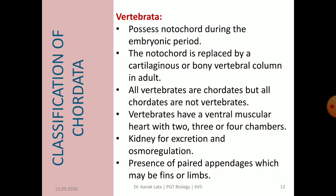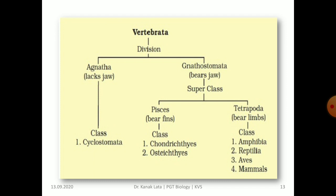Now let us see about Vertebrata. In case of Vertebrata, notochord is present during the embryonic period and it is replaced by a cartilaginous or bony vertebral column in the adult. That is why all vertebrates are chordates, but all chordates are not vertebrates. Vertebrates have a ventral muscular heart with 2, 3 or 4 chambers. They have a pair of kidneys that require high blood pressure for their working, and kidneys also help in osmoregulation. There is presence of paired appendages that may be in the form of fins or in the form of limbs.